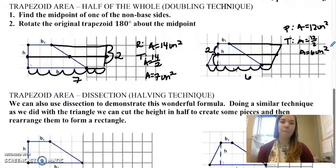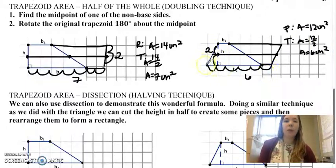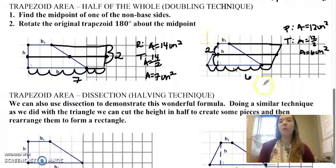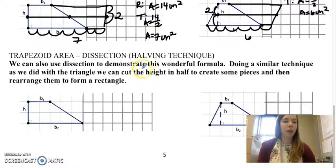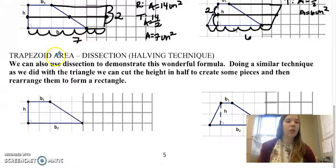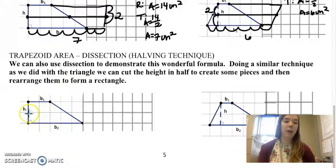And you could find that using your normal formula. But this is kind of how we're proving that our trapezoid formula is the way it is. It has the one half here. All right. Trapezoid area. Another way to show that this is true is to have your trapezoid. So we can also use dissection to demonstrate our formula. So we're going to rearrange a piece to make it into a rectangle, which are easy to find on a coordinate grid.